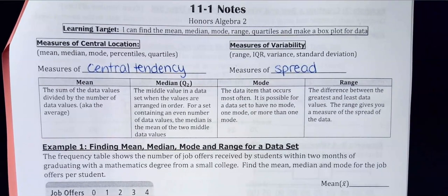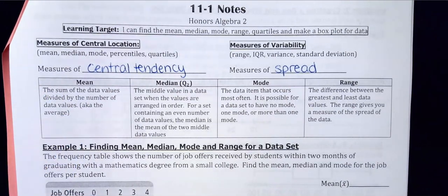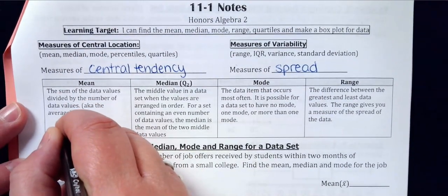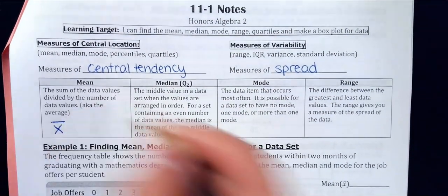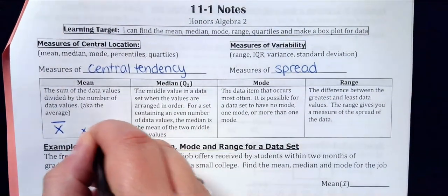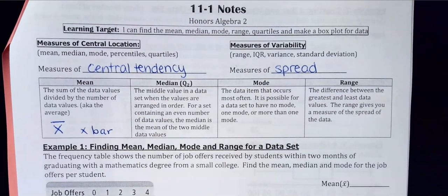Today we'll mostly focus on measures of central tendency. The mean — another word for it is average — is the sum of the data values divided by the number of data values. The symbol for the mean is x-bar, which is an x with a little line segment over it. You'll also see that symbol in the calculator when we work with the mean.